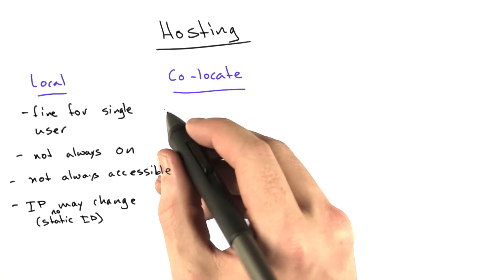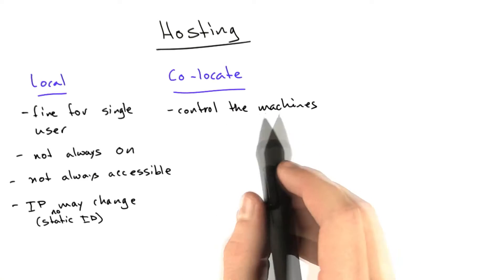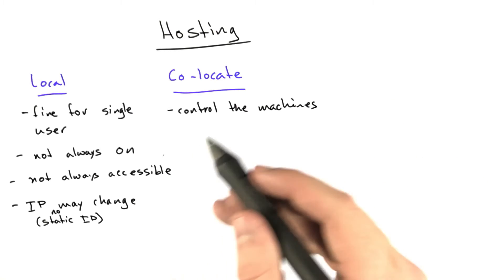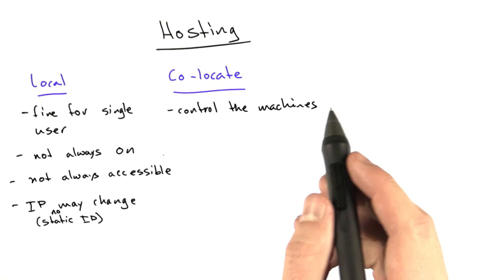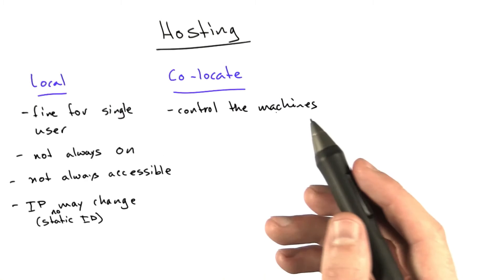The biggest ones have their own data centers. The biggest reason you do this is you have control over the machines. You can build whatever machines you want, configure them however you want, wire them together however you want. They're your machines and you're renting the space.